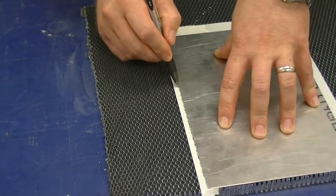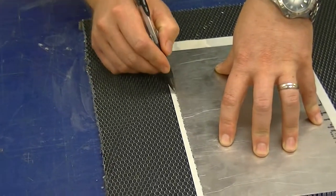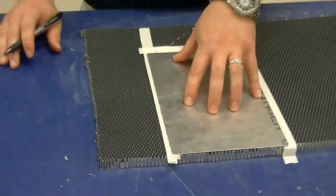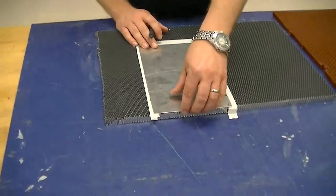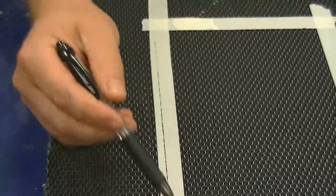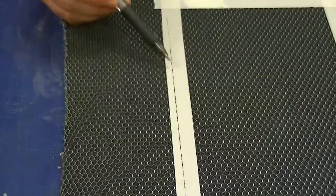Now, depending on if you have a pin or a marker, you can get a nicer line than I have here. But what I would do is remove the template now that I have a straight line, and take the material over to the band saw and simply cut down this line.